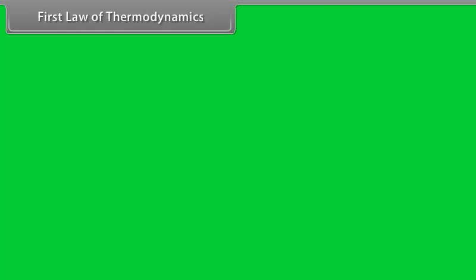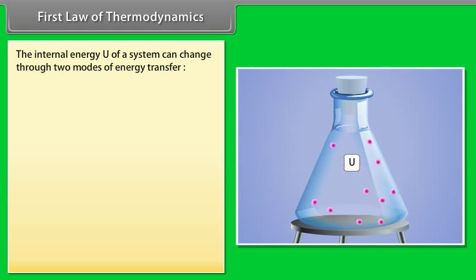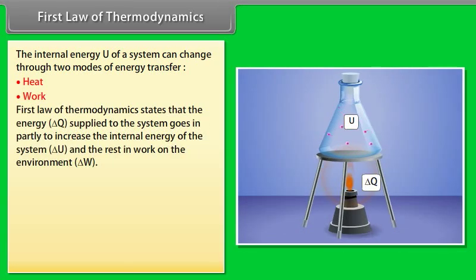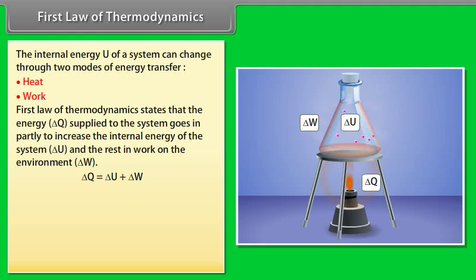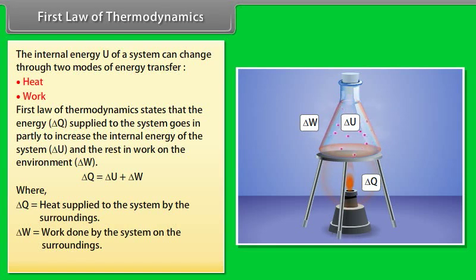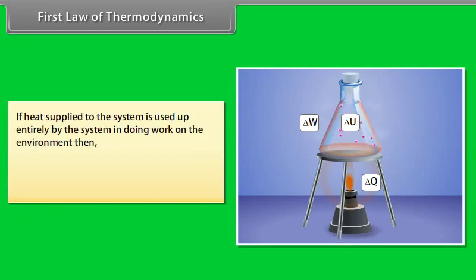First Law of Thermodynamics: the internal energy U of a system can change through two modes of energy transfer — heat and work. The energy delta Q supplied to the system partially increases the internal energy delta U, and the rest does work on the environment delta W. Therefore: delta Q = delta U + delta W, where delta Q is heat supplied to the system, delta W is work done by the system on the surroundings, and delta U is change in internal energy. If heat supplied is used entirely in doing work, then delta U = 0, giving delta Q = delta W.